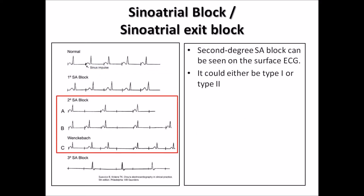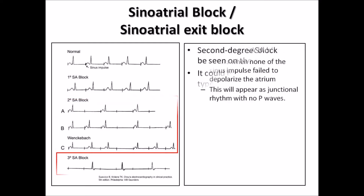Second degree SA block can be seen on the surface EKG. It could either be type 1 or type 2. Third degree SA block occurs when none of the sinus impulses depolarize the atrium. This will appear as junctional rhythm with no P wave.